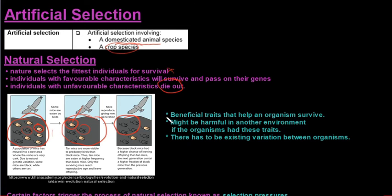So more black-furred mice survive and they pass on this favorable characteristic to their offspring. Now looking at these points on the right-hand side: beneficial traits help an organism survive, but it might be harmful in another environment if the organism has these traits. So in a different environment, let's say in the desert, these black mice would be the ones that would be eaten because the white mice would then be very well camouflaged with the sand and the black mice would stand out.